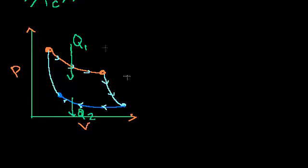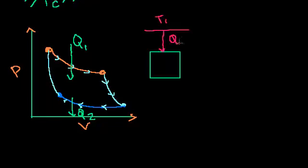And so if I were to draw this another way, I could draw it like this. Well, that's my engine. This is my hot reservoir. Let me put this as T1. T1 is up here. It transferred Q1 to my Carnot engine.